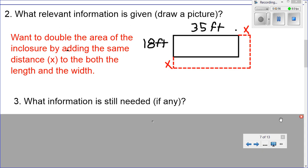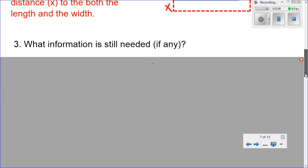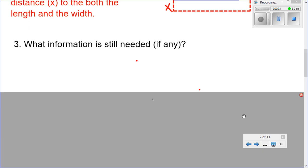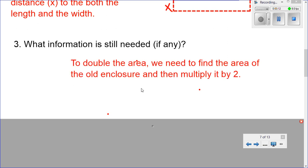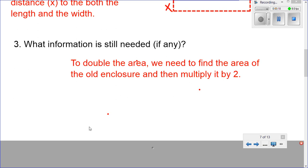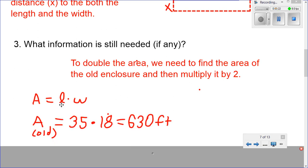Okay, the next part we need to figure out is, what information do we still need? We have the existing enclosure, which is 18 by 35, and we need to double the area. So, what we need to do is find the existing area. So, to double the area, we need to find the area of the old enclosure, and then multiply it by 2. So, to find the area of the old enclosure, remember, area is length times width.